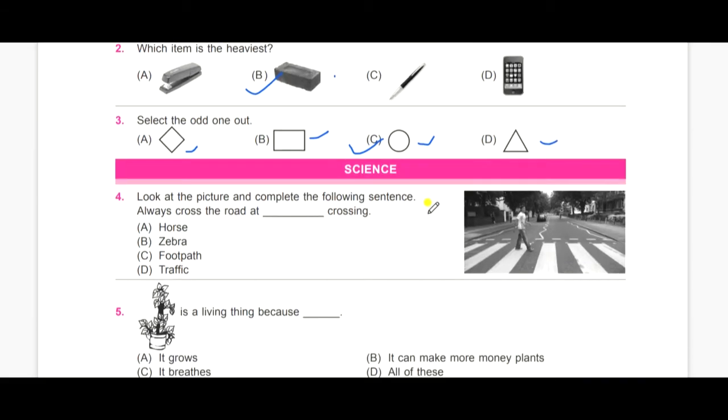Now we will go to the fourth question. Look at the picture and complete the following sentence. Always cross the road at dash crossing. A, horse, B, zebra, C, footpath and D, traffic. Yes, you are right. We will always cross the road at zebra crossing.